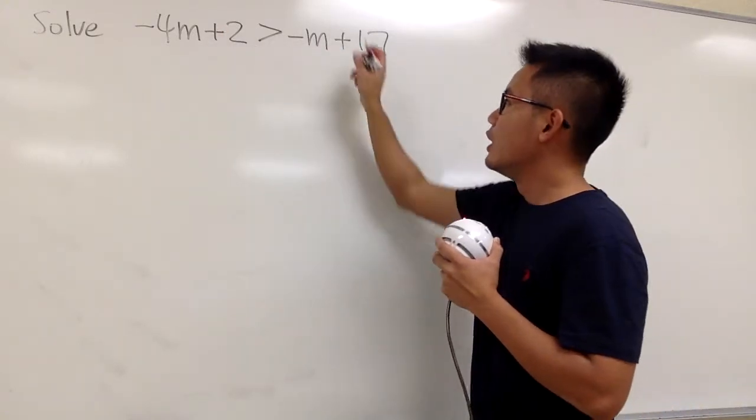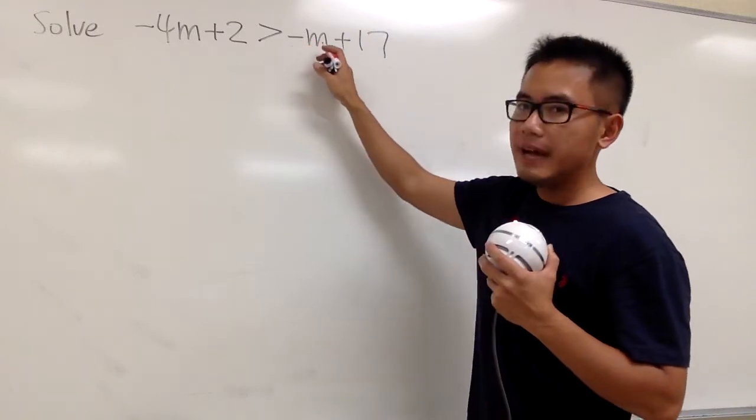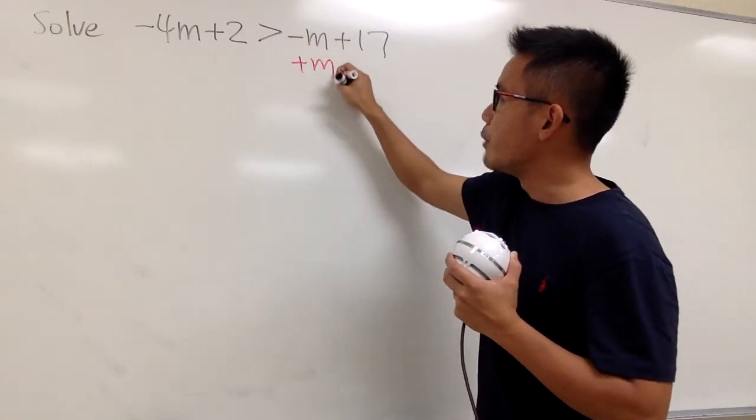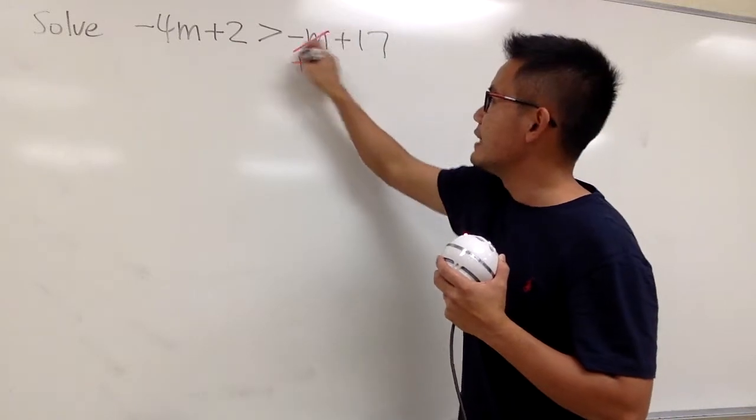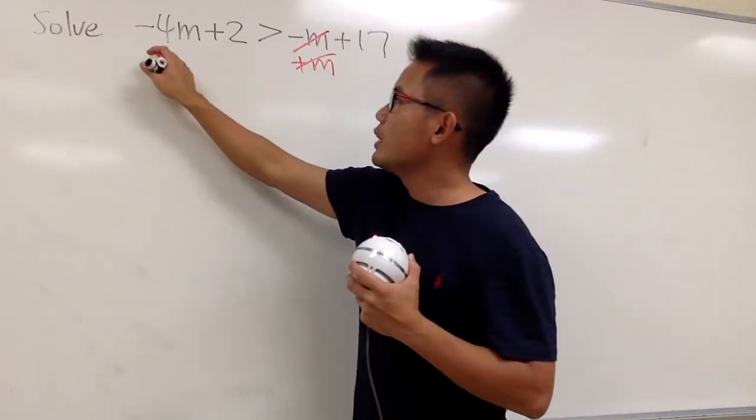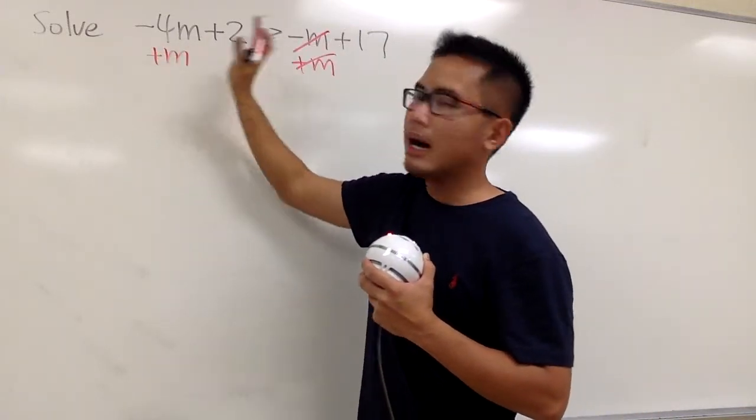With that being said, here we have negative m, I'm just going to add the m on both sides, so that this and that will be cancelled, and we can just have all the m on the left-hand side.